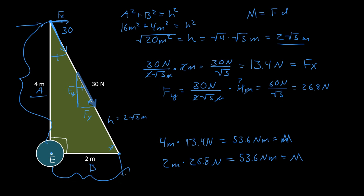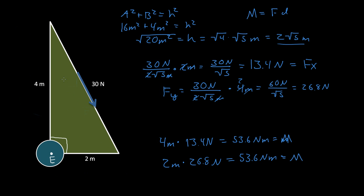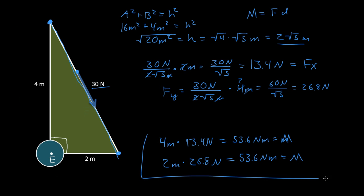So you can find the moment without using any angles or without being told exactly where the force is applied. We weren't given where the 30 Newtons was being applied — only that it was on the hypotenuse. Using the principle of transmissibility, which means a vector can be moved anywhere along its line of action, we moved the force up to the top point where only the x component had a bearing, or down to the bottom where only the y component had an effect, and we see they are equivalent.